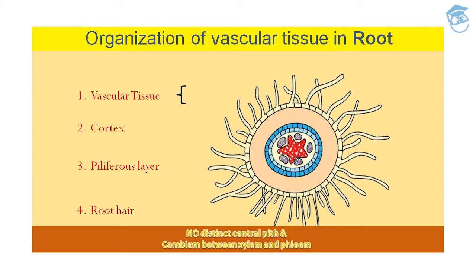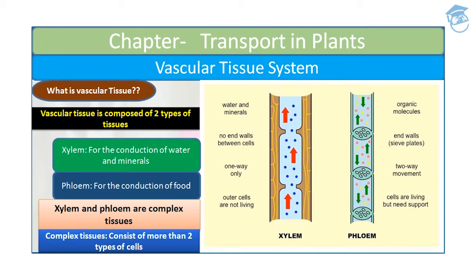So to summarize the organization of vascular tissue in the root: it has root hairs forming the piliferous layer, cortex acting as a storage organ for food material, and vascular tissue — phloem and xylem — arranged in an alternate fashion. Vascular tissue is composed of two types: xylem, used for conduction of water and minerals, and phloem, used for conduction of food.